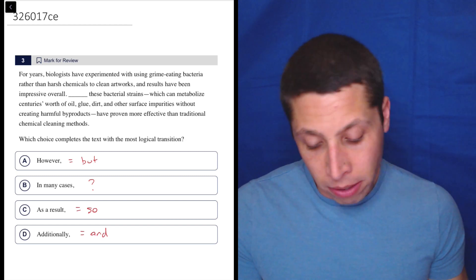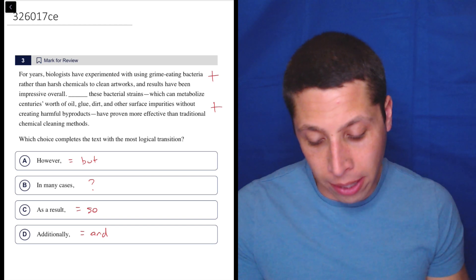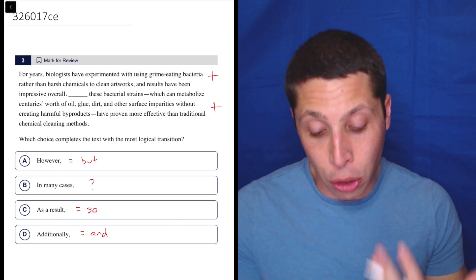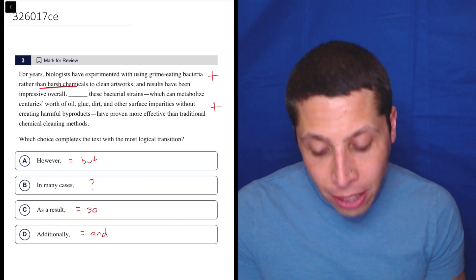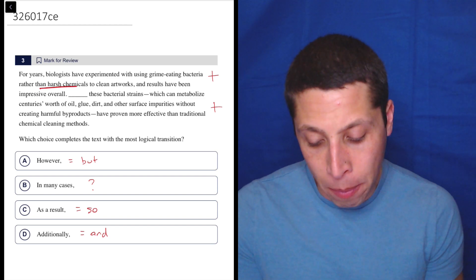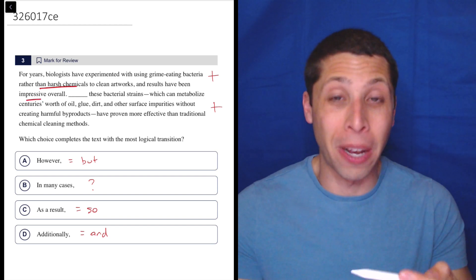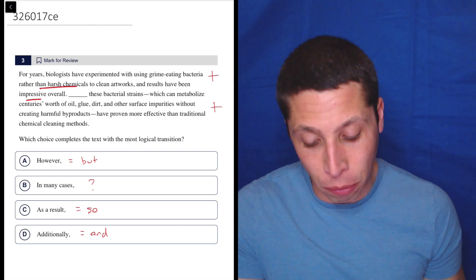Well, I don't know. This seems like a positive sentence and so does this one, right? They're saying how these chemicals work, that they're good, right? They are not using harsh chemicals. So impressive overall, that's kind of a double negative and then a positive. So that's a positive idea overall.